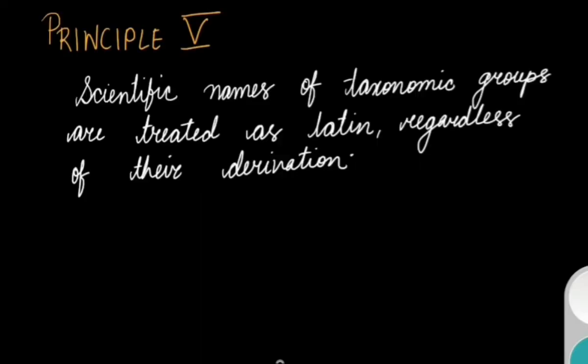The fifth principle states that scientific names of taxonomic groups are treated as Latin regardless of their derivation. This principle is straightforward because it says whatever scientific names you are going to give, it has to be treated as Latin whatever the source may be. I'm going to give you some examples.